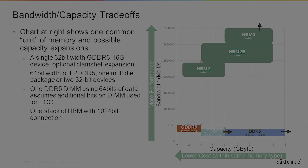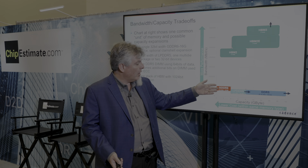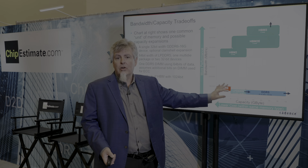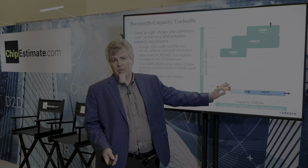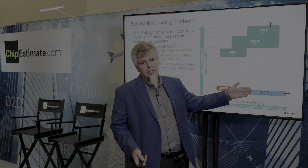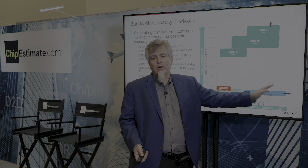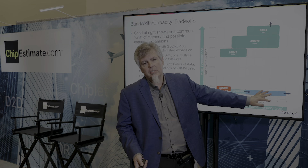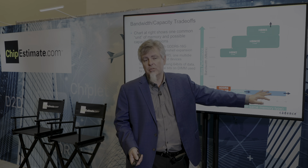LPDDR5 — most people think of it as a mobile memory, but very commonly we're starting to see it in artificial intelligence and machine learning applications, where LPDDR5 provides the correct ratio of bandwidth to capacity. For main memory in compute servers, DDR5 provides that main memory. But these memory types actually exist within different spaces within the solution space.